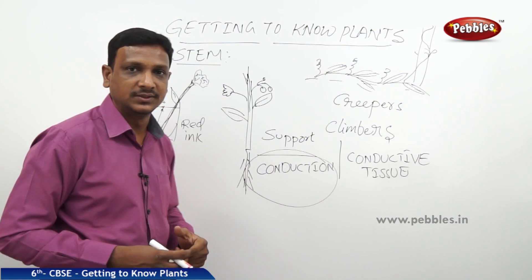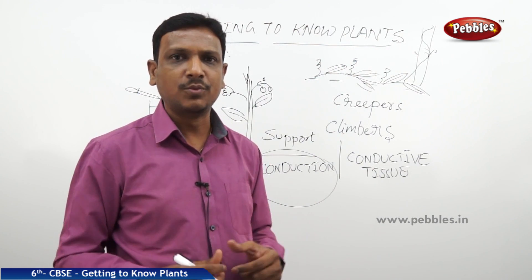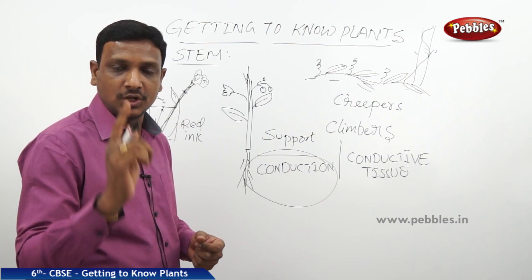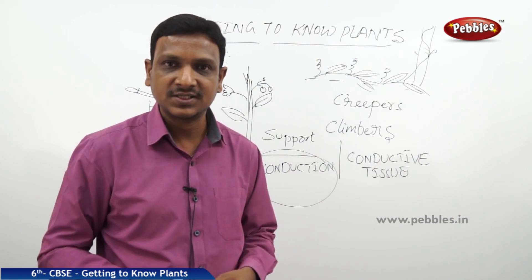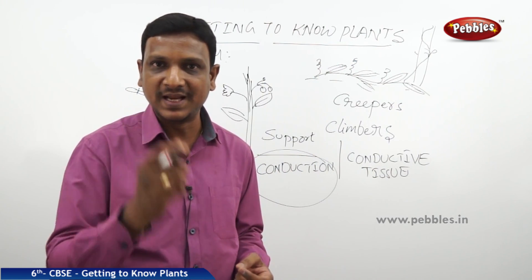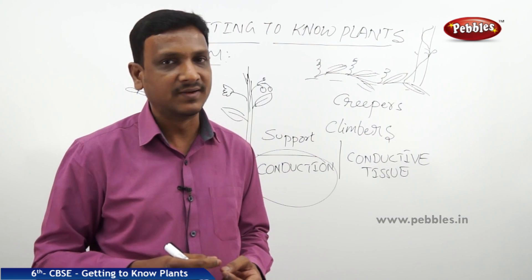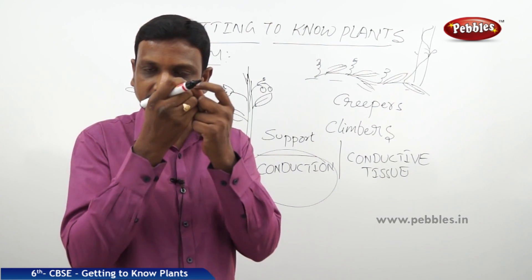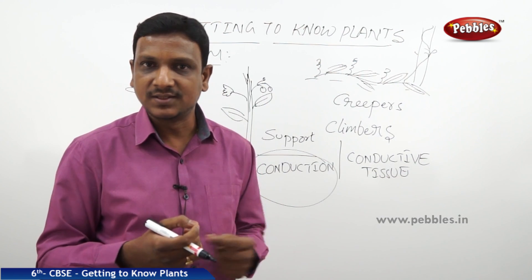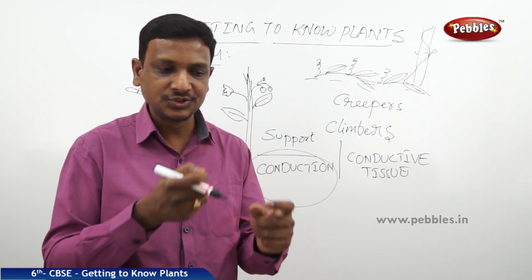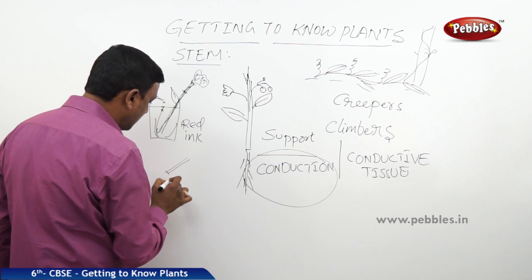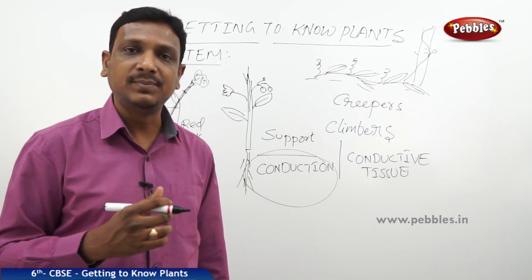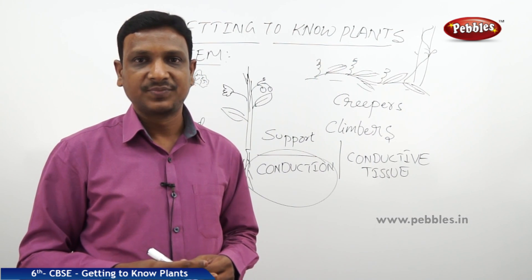You can do one more activity: cut a thin slice of the stem with a sharp blade — but do this under adult supervision, such as a parent, elder sibling, or teacher, as the blade is very sharp. Use a hand lens or magnifier to examine the slice. Inside, you can see colored dots, showing that the stem has pipelines or vessels carrying the water.